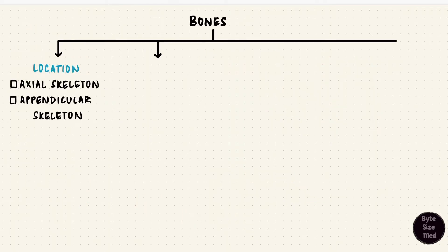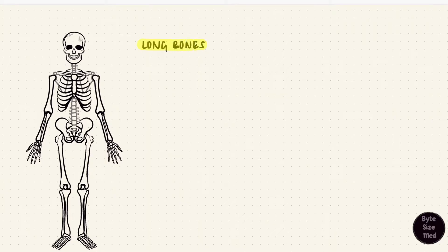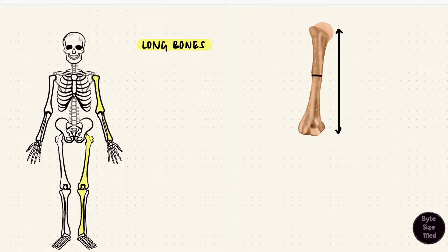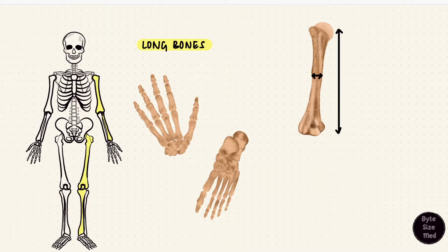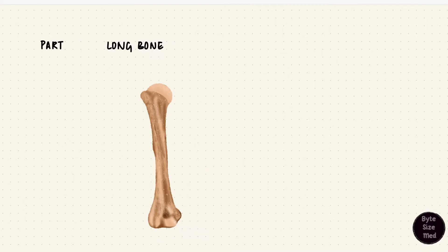Another way that bones are classified is based on their shape: long, flat, short, irregular, and sesamoid bones. The first category is long bones; classic examples are the humerus and the femur. A bone is long when its length is more than its breadth. So the bones of the hands and feet — like the metacarpals and the metatarsals — are also long bones, even though they're smaller than the humerus or femur.